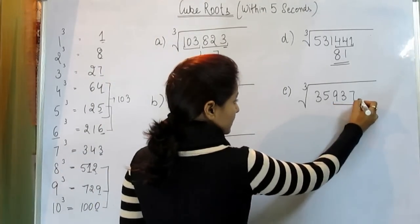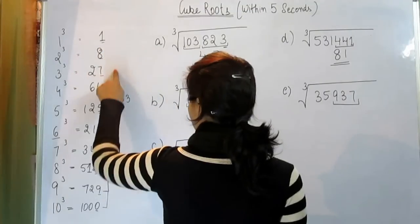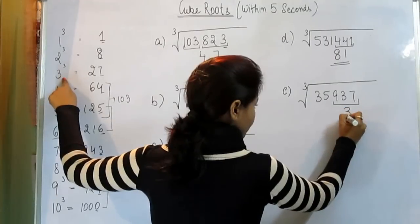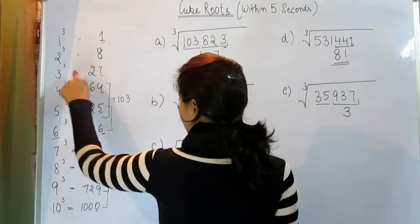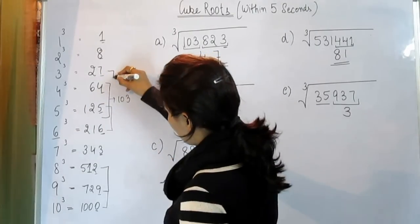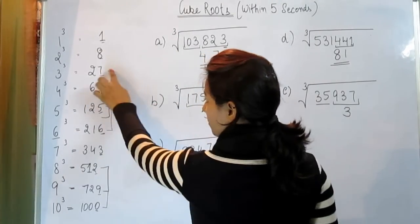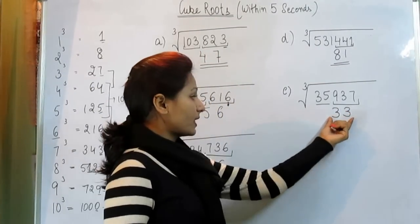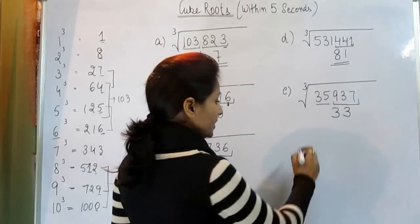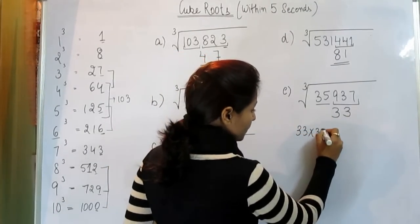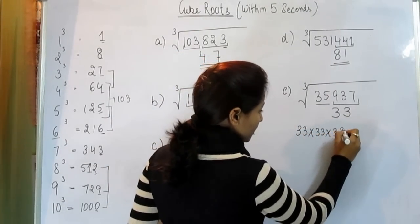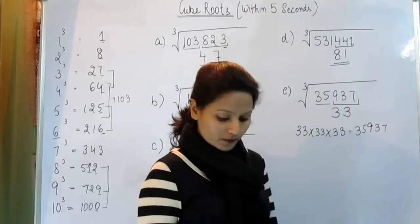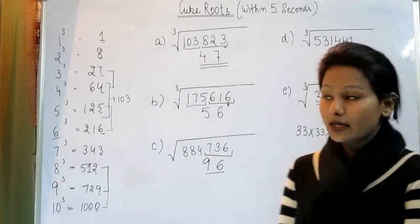Now last is 937. 7 comes here, this is the cube root of 3. And 35 comes between these two numbers. So smallest number is the answer, that is 3. So when you multiply this number three times, 33 into 33 into 33, you will get 35,937 as an answer. It tells this was the cube root.